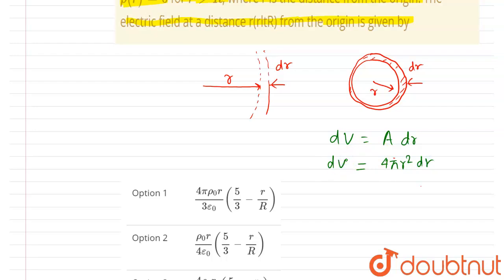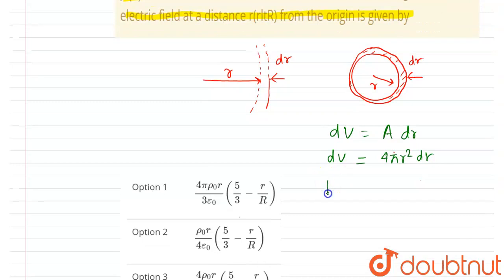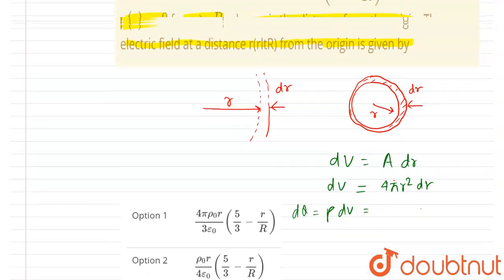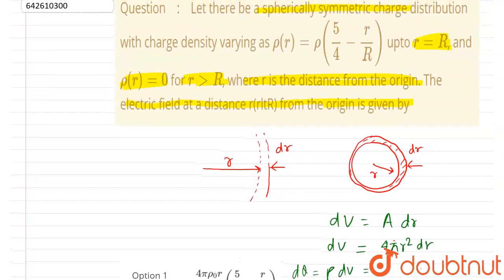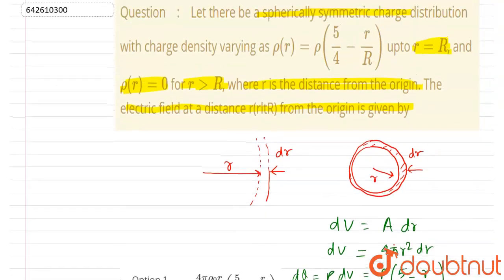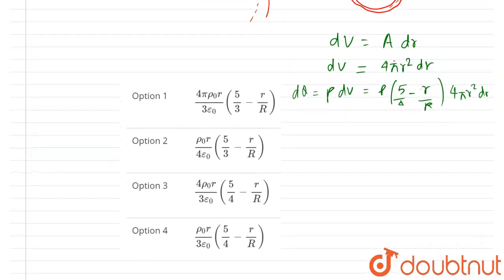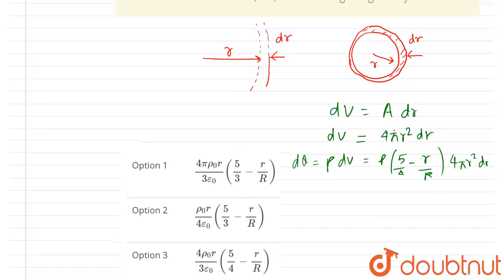For this small volume we can assume the density to be constant, equal to ρ(r). Multiplying ρ by dV gives the charge on this shell. The given ρ is ρ₀ times (5/4 − r/R), so we substitute that value in to get the charge on the shell.